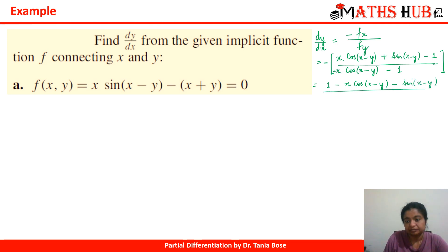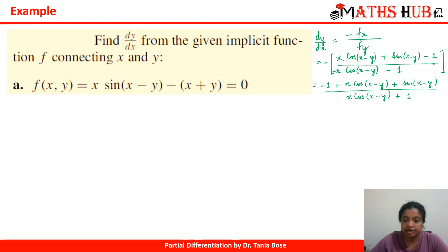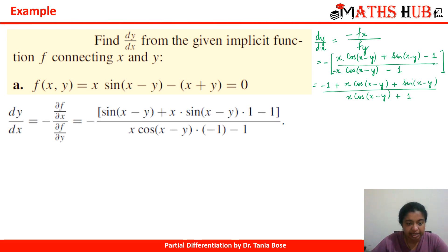So we can write dy/dx as: [1 − x·cos(x − y) − sin(x − y)] divided by [1 − x·cos(x − y)]. Or, you can absorb the negative sign into the denominator to get [x·cos(x − y) + sin(x − y) − 1] divided by [x·cos(x − y) − 1]. That is our dy/dx for this example.